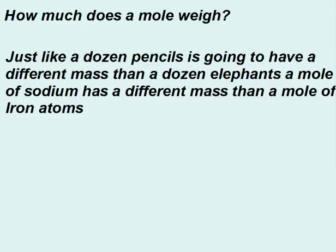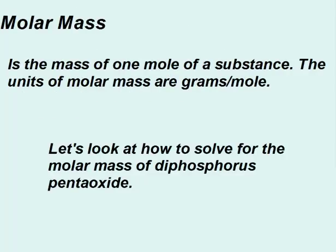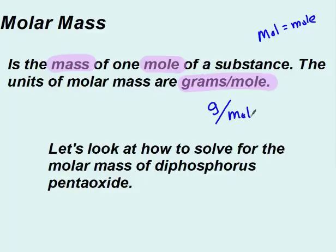Just like a dozen pencils is going to have a different mass than a dozen elephants, a mole of sodium has a different mass than a mole of iron atoms. That mass is referred to as molar mass. Molar mass is the mass of one mole of a substance. The units for molar mass are grams per mole. The abbreviation for mole is MOL. You're not saving a lot of space, but you can drop the E for an abbreviation. So I could abbreviate grams per mole by G for grams and MOL for mole.